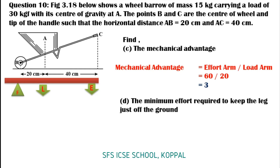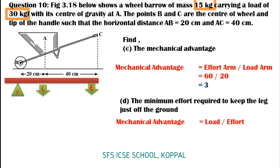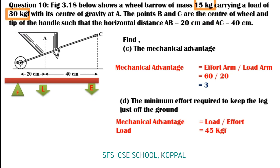Now Part D — the minimum effort required to keep the leg just off the ground. We use mechanical advantage equals load divided by effort. Here, total load equals 30 kgf plus 15 kgf — because total load equals weight of load plus weight of wheelbarrow — giving 45 kgf. So effort equals load divided by mechanical advantage: 45 divided by 3, which is 15 kgf.